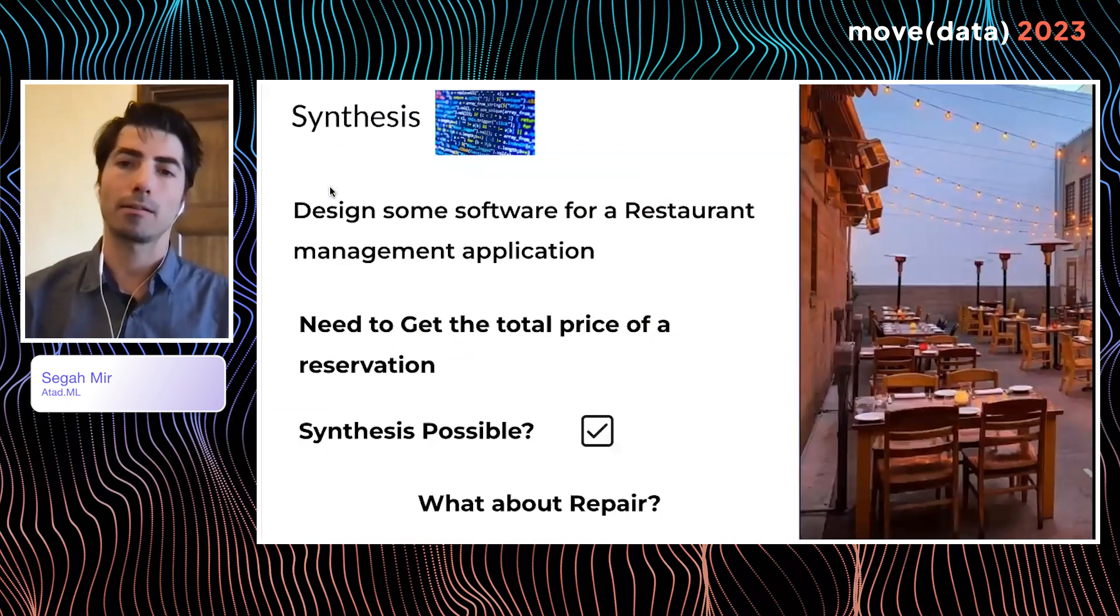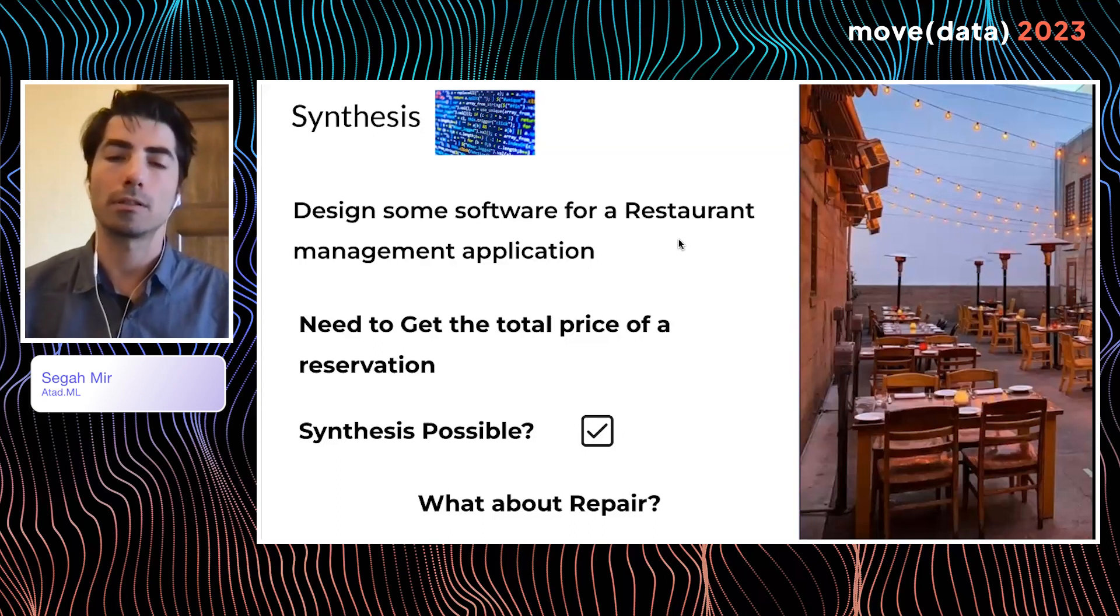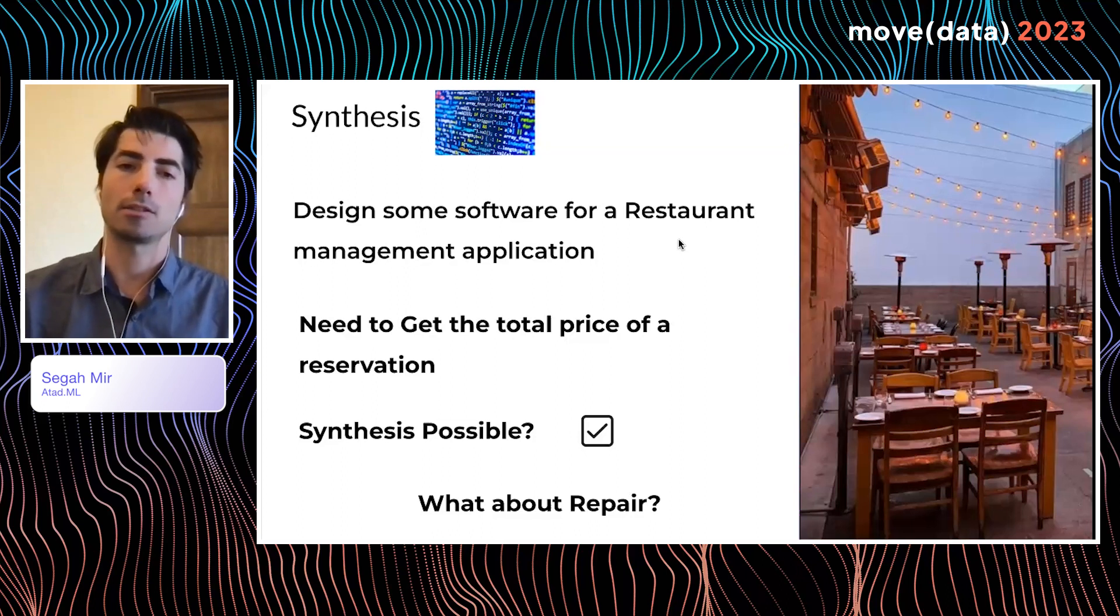Let's look at one hypothetical example, a restaurant management application. Let's imagine that when we're designing such a software, and if we had a restaurant application, we'd probably want to have some kind of ability to pull the total price of all reservations for the day. Is it possible? Yes. In terms of synthesis, it's totally possible.